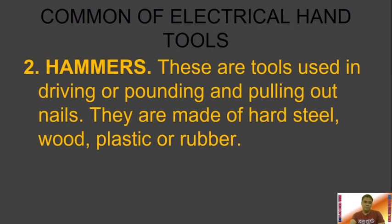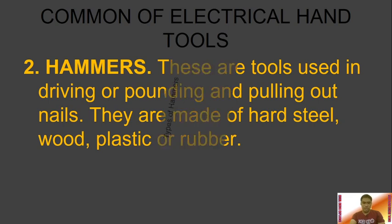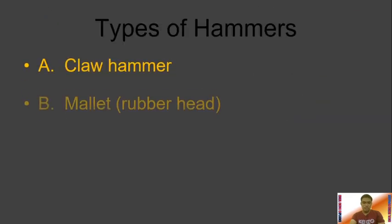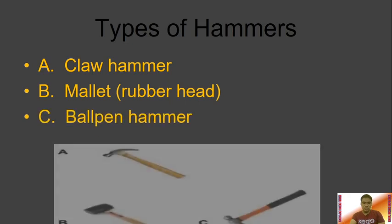Another common electrical hand tool is the hammer. Hammers are tools used for driving, pounding, and pulling out nails. They are made of hard steel, wood, plastic, or rubber. The three common types of hammer used in electrical work are the claw hammer, the mallet, and the ball peen hammer.